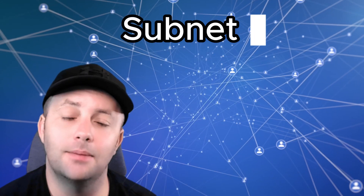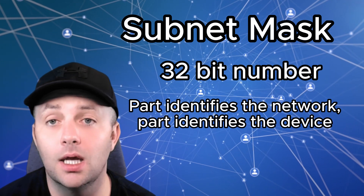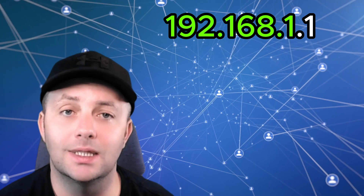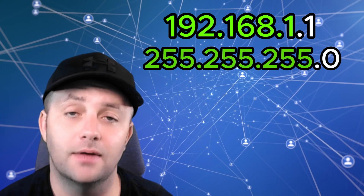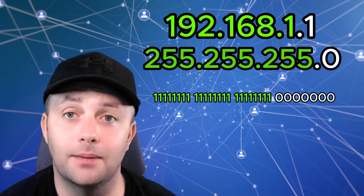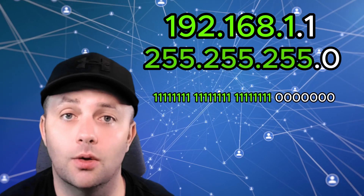To understand subnetting, you need to know about subnet masks. A subnet mask is a 32-bit number that helps the network know which part of an IP address refers to the network and which part refers to the device itself. In binary form, a subnet mask consists of a series of ones followed by a series of zeros — the ones represent the network portion while the zeros represent the host portion. For example, take the IP address 192.168.1.1 with a subnet mask of 255.255.255.0. The first 24 bits of the subnet mask are ones, indicating that the first 24 bits of the IP address identify the network, while the remaining bits are zeros representing the host portion.